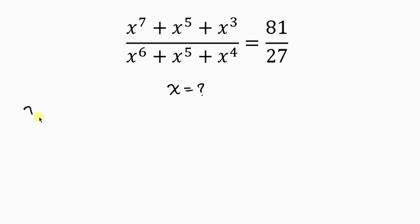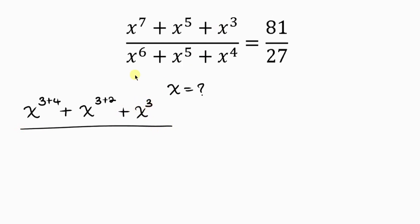So x to the 7 is the same as x to the 3 plus 4. Why? Because the lowest power in the numerator is 3, so I just have to add 4. Similarly, x to the 5 is the same as x to the 3 plus 2, plus x to the 3. Now for the denominator, x to the 6 is the same as x to the 4 plus 2, since the lowest power here is 4.